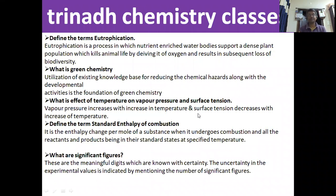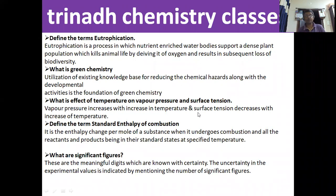Next: define Cp and Cv. Cp is the heat capacity at constant pressure — the amount of heat required to raise the temperature of the body by one degree at constant pressure. Cv is the heat capacity at constant volume — the amount of heat required to raise the temperature of the body at constant volume. We also need to learn how to derive Cp minus Cv equals R.